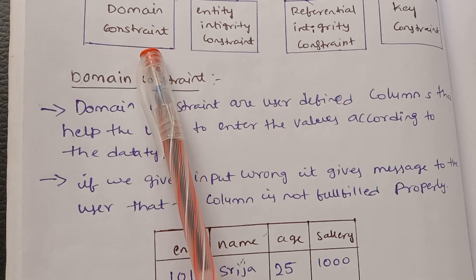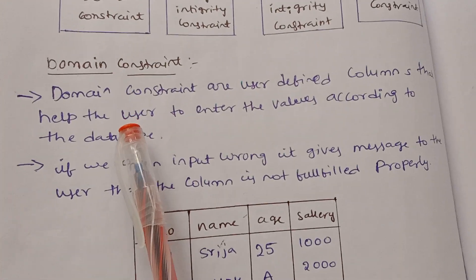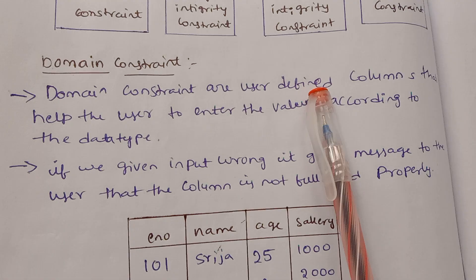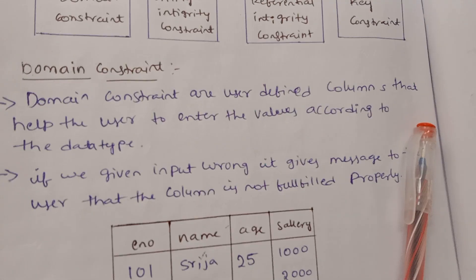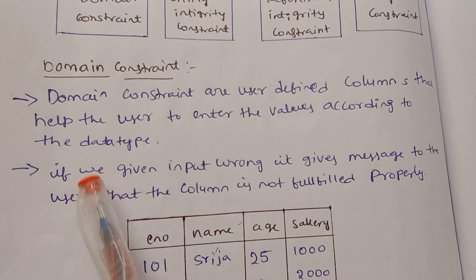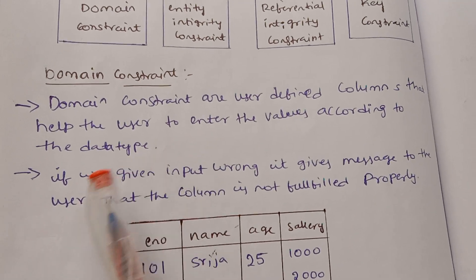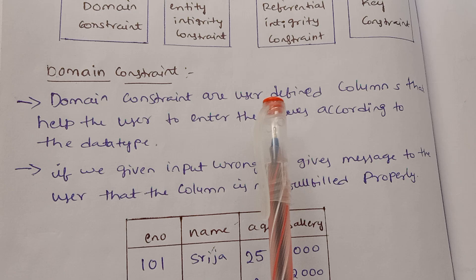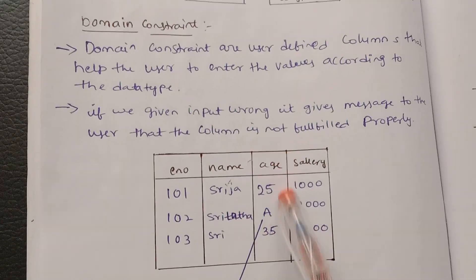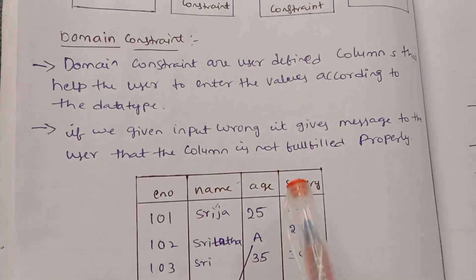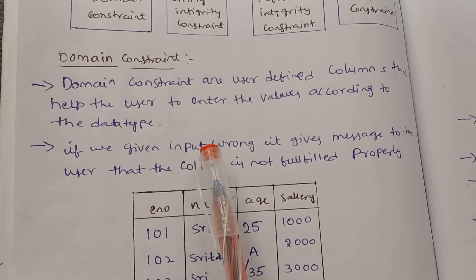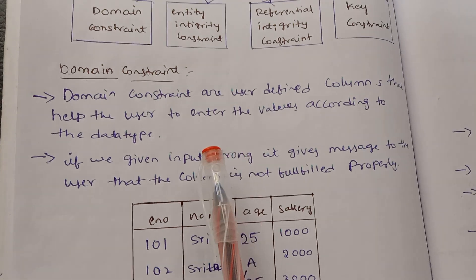The first type is domain constraint. Domain constraints are user-defined columns. They help the user to enter values according to the defined data types.